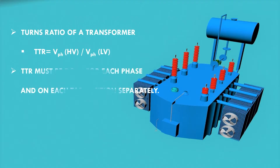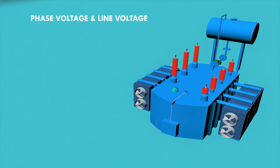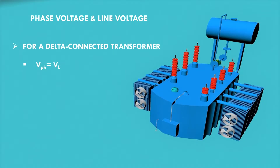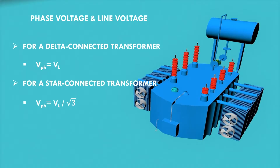TTR must be performed for each phase and for each tap position separately. For a delta connected transformer, the phase voltage is the same as the line voltage, whereas for a star connected transformer, the phase voltage is equal to the line voltage divided by the square root of 3.